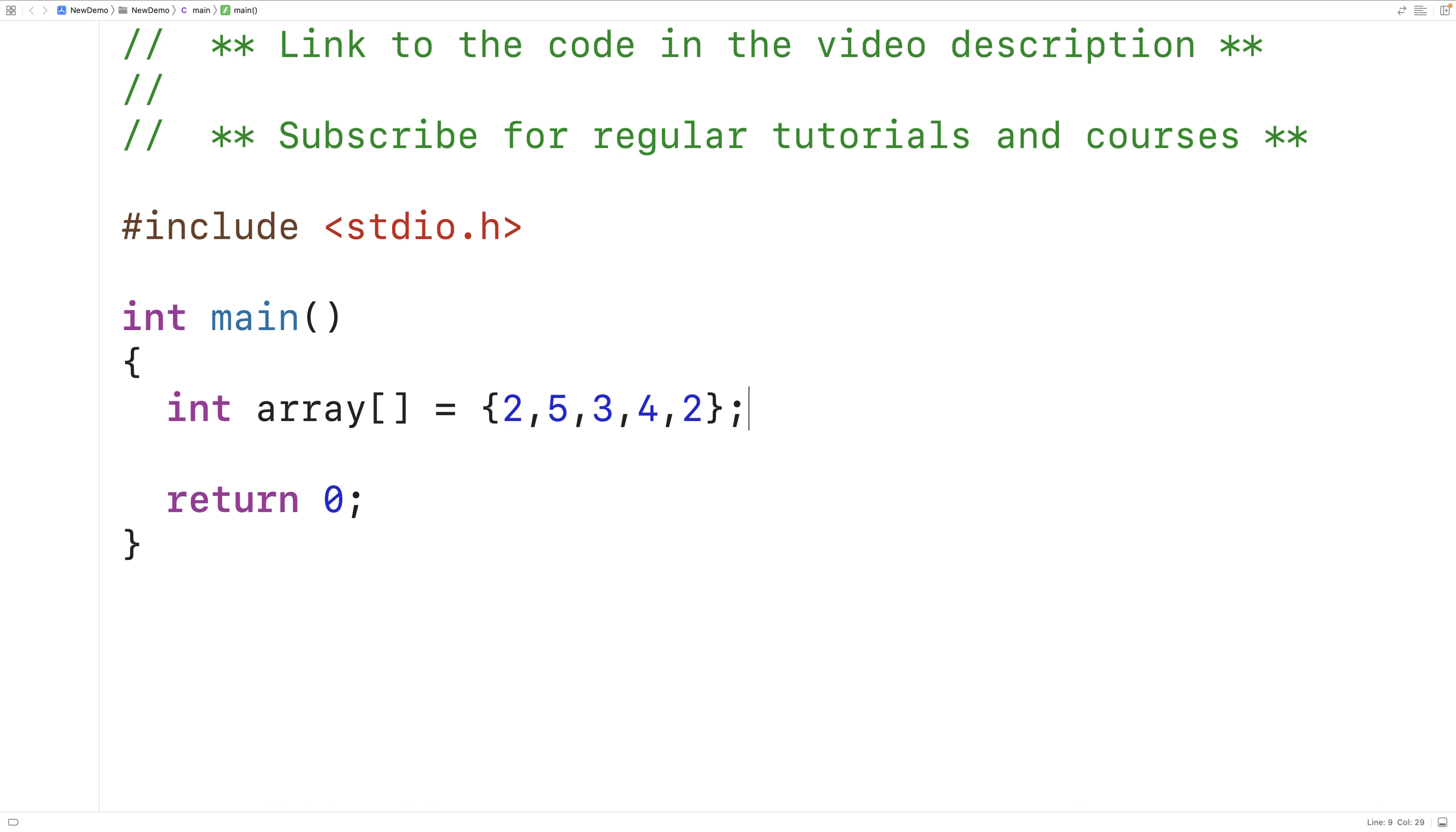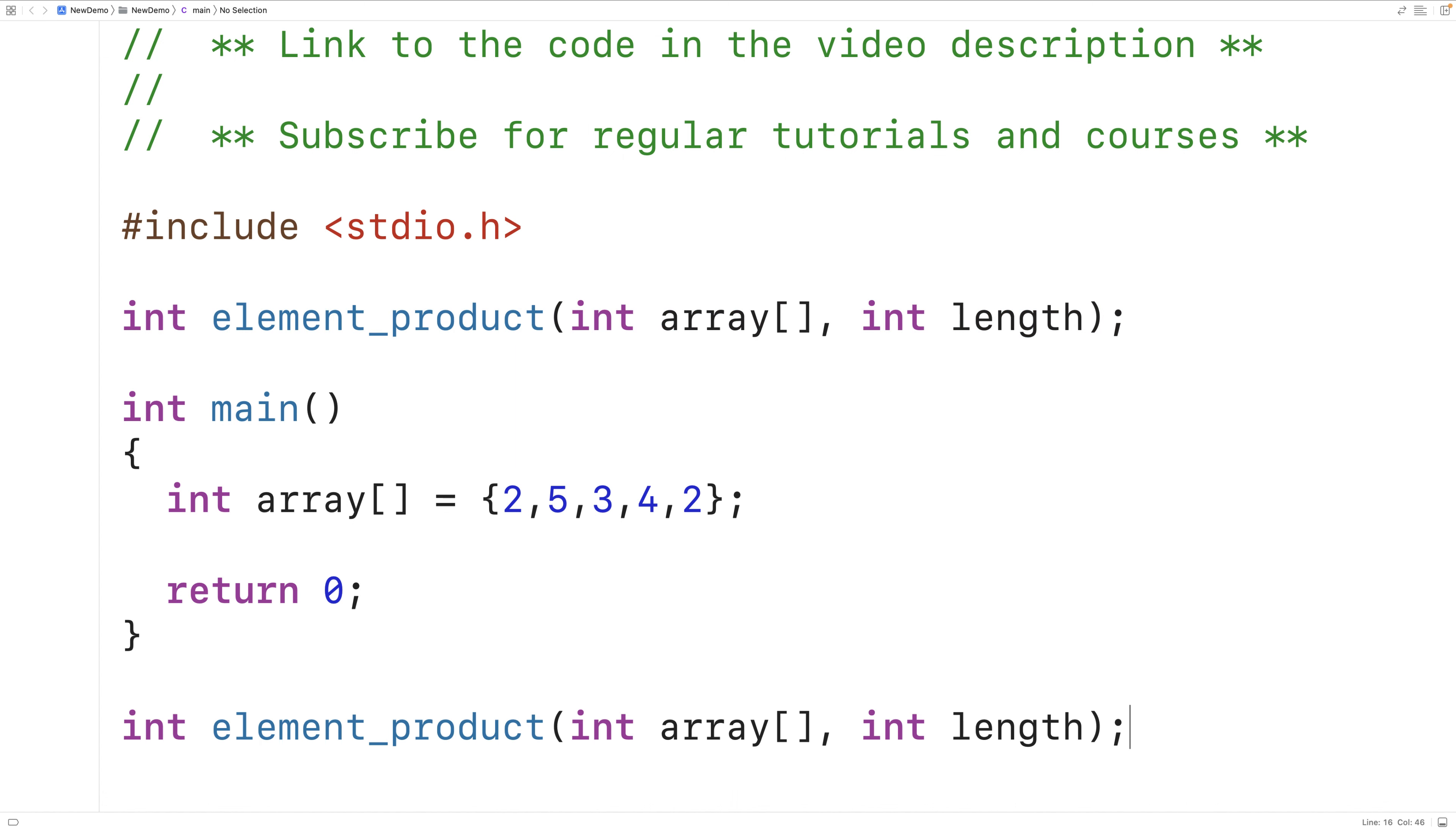We'll create a function to compute the product of the elements in this array. The function will have an int return type and we'll call the function element_product. The function will have two parameters, the array itself and the length of the array. So we'll copy and paste this and create the definition of the function down here.